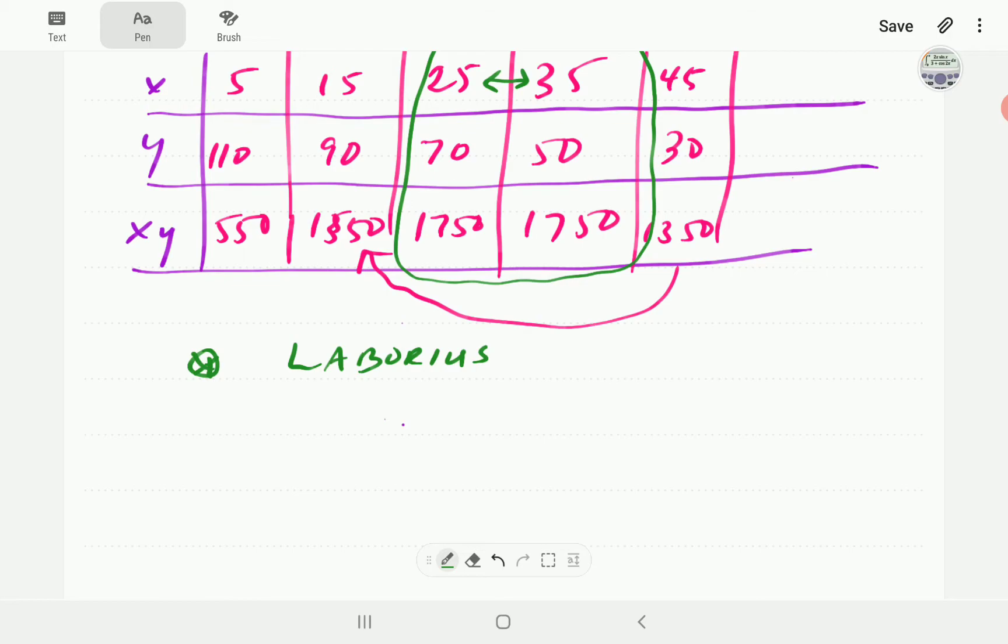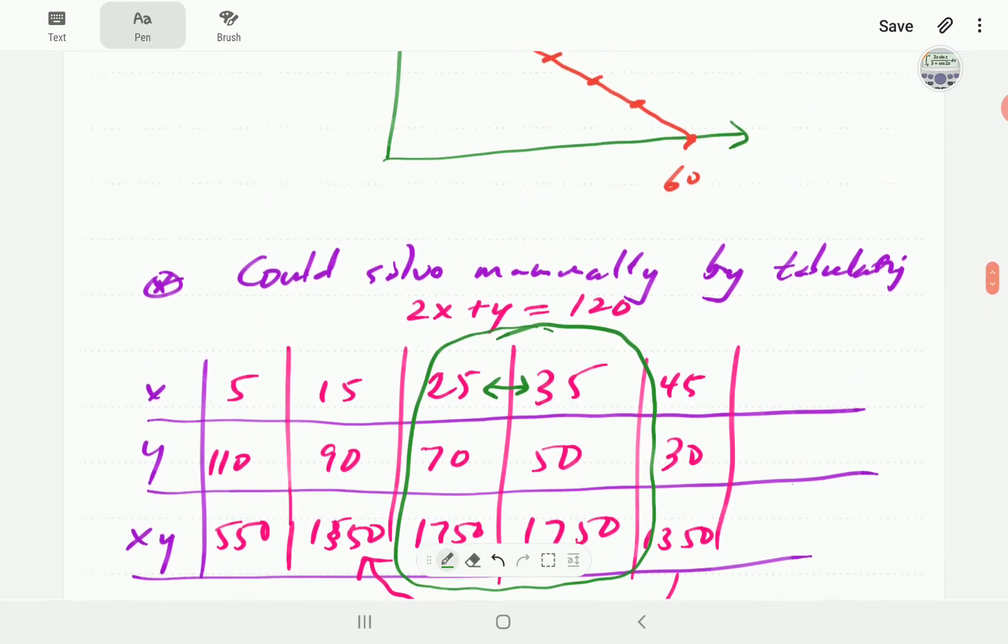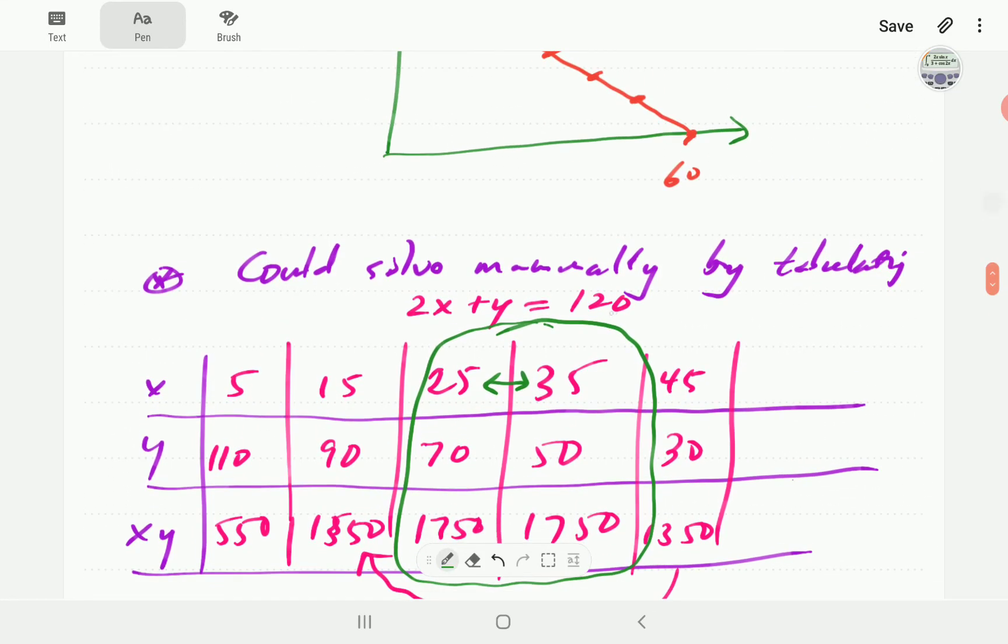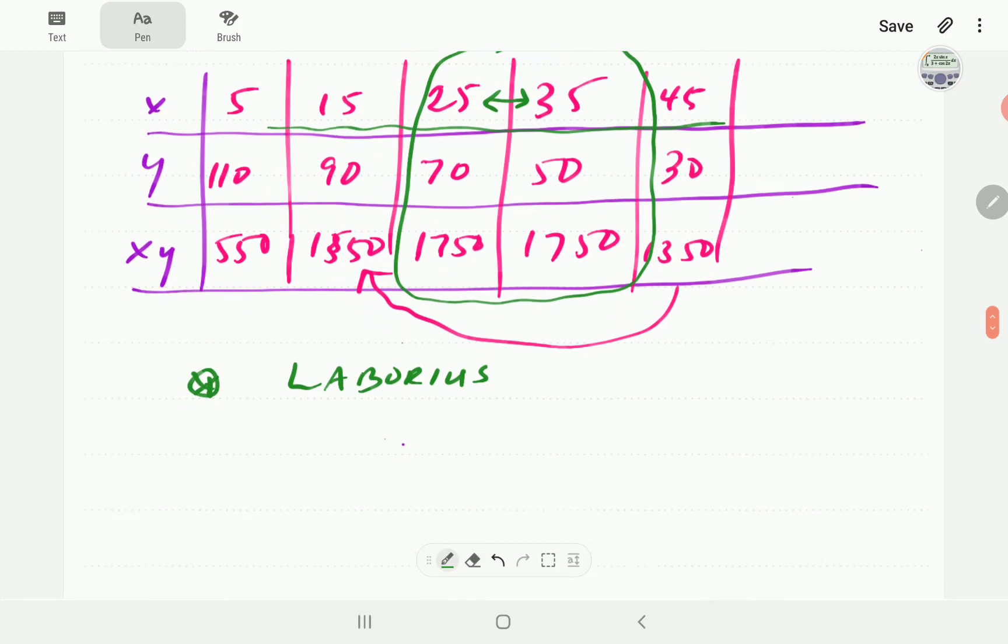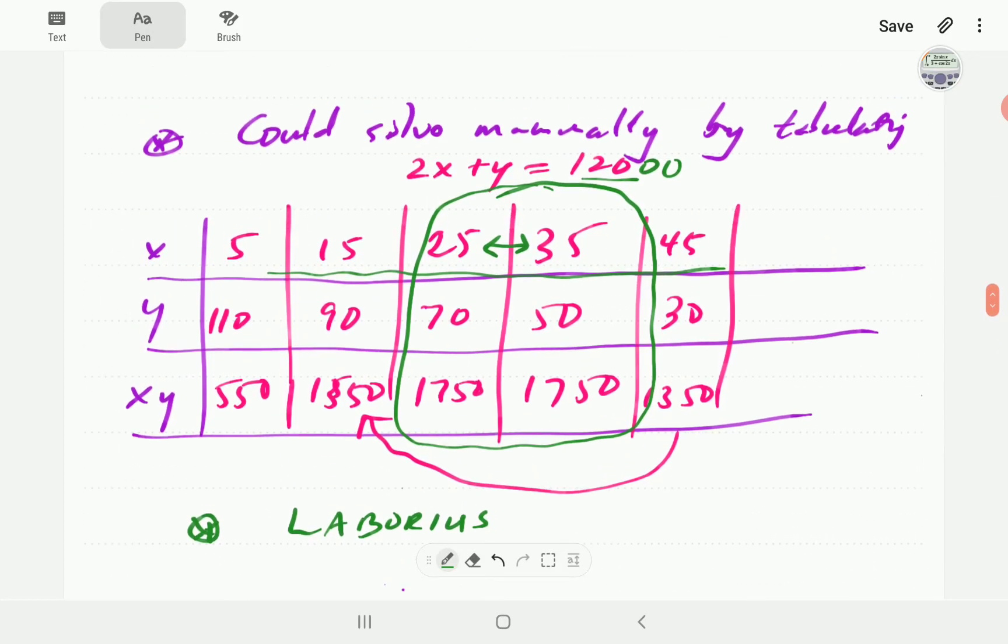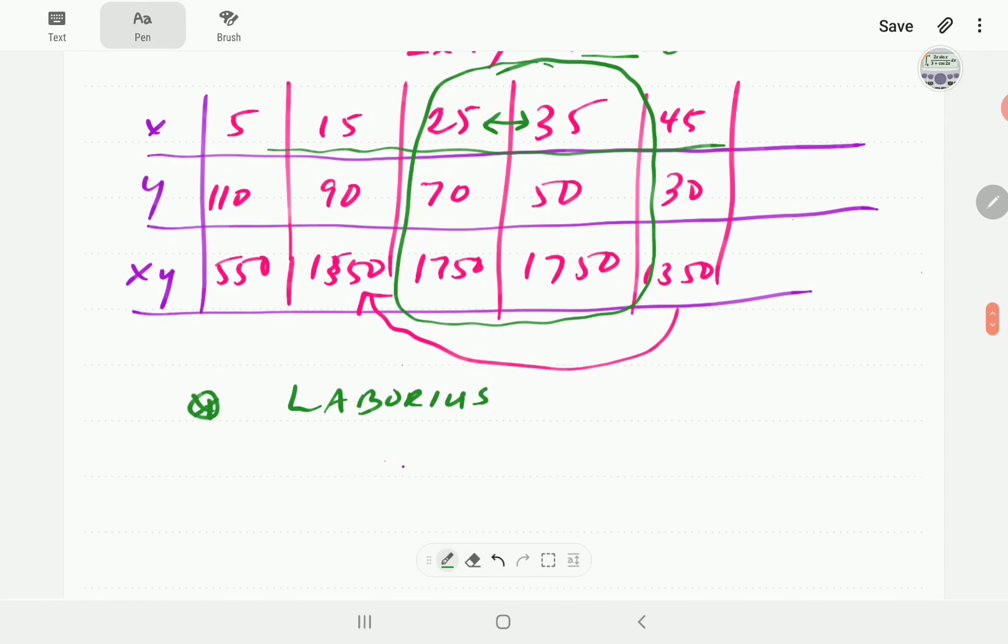That is that method, but the thing we can note with this method is that it's going to be very laborious. It involves a big amount of trial and error and it's going to be time-consuming. Imagine if this number was 1,200, then imagine how many of these we would have to try, or even if it was 12,000. If that number is big, we're going to have to try a lot of them. But even if it's 120, imagine if the number we're looking for is actually not a whole number. If it is some kind of a fraction, then it is going to be almost impossible. So that's where the calculus comes in handy.